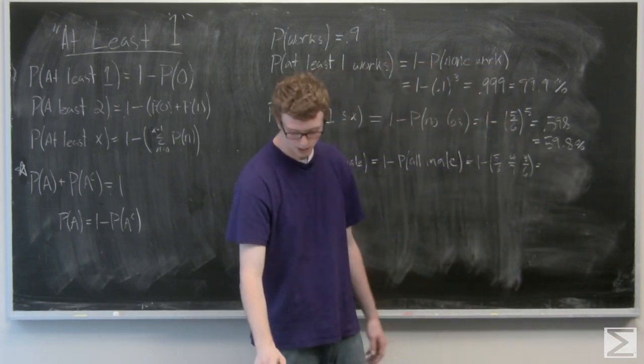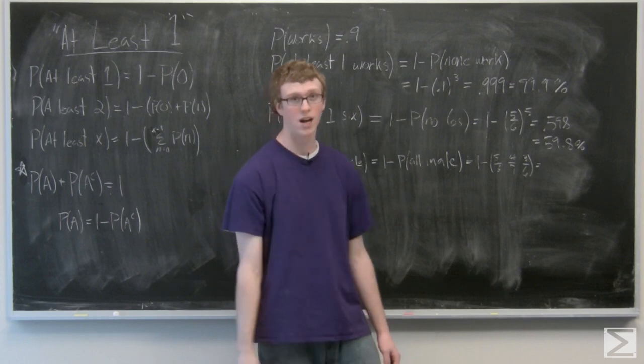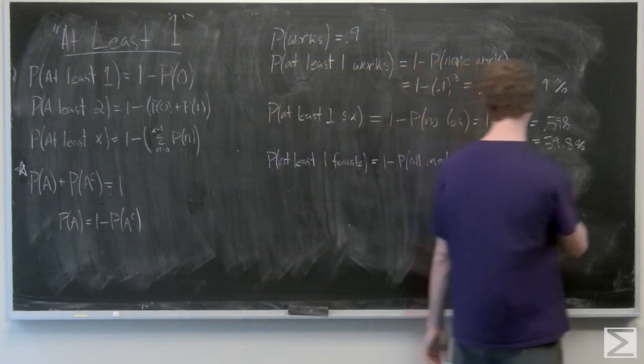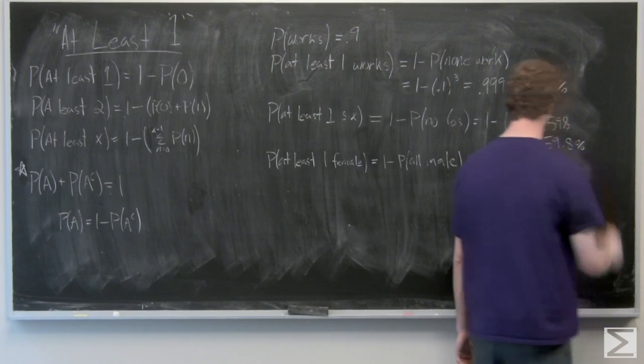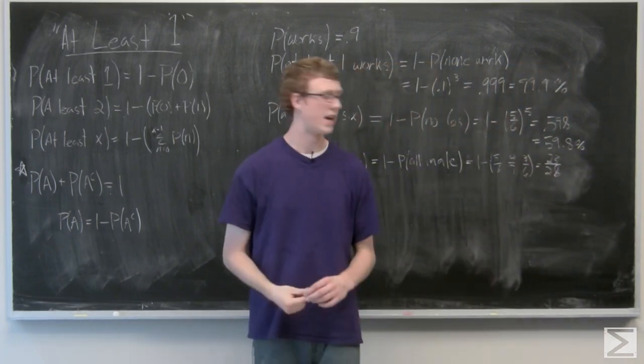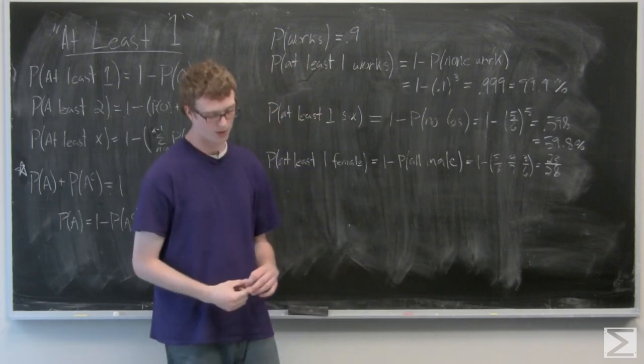And that probability is going to be one minus five out of 28 or 23 out of 28. So that's the probability that at least one is going to be female.